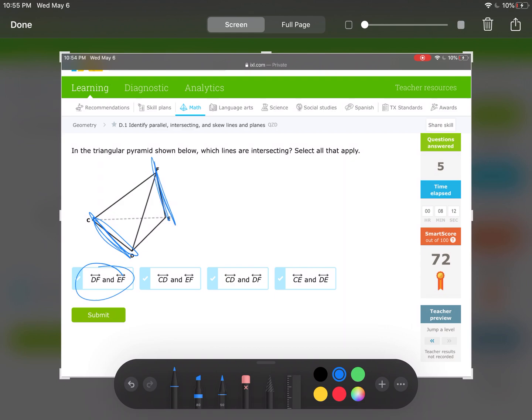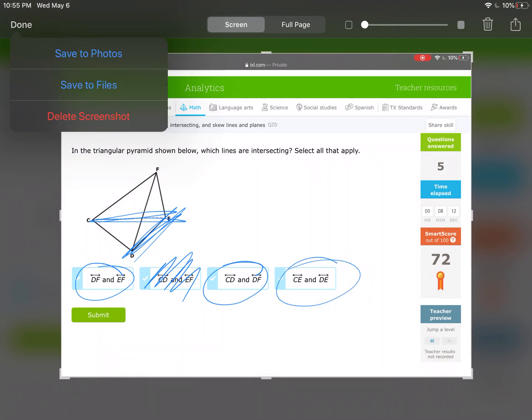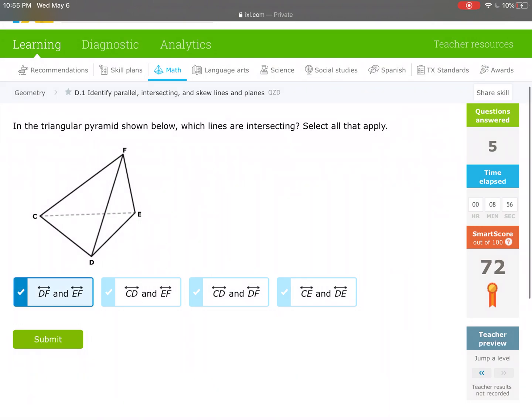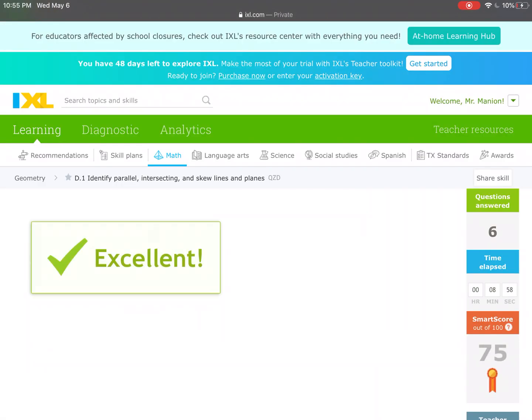CD-EF. Are those intersecting? No. CD-DF. Do those lines touch, do they intersect? Yes. And last, CE-DE. Yes. So I have three answer choices to pick: one, two, and three. Excellent.